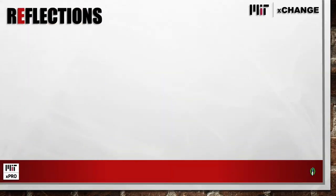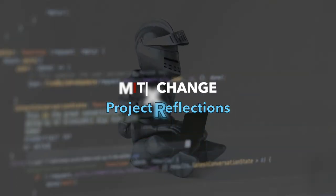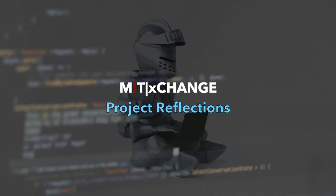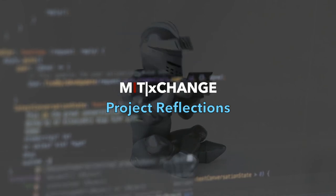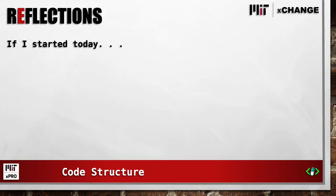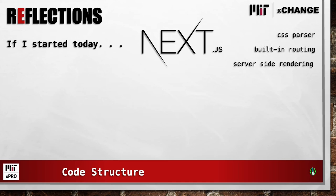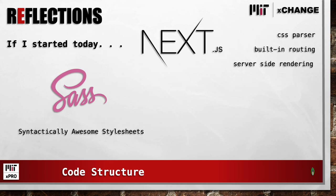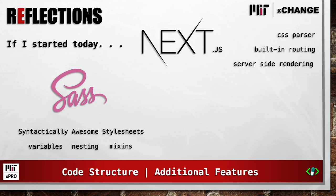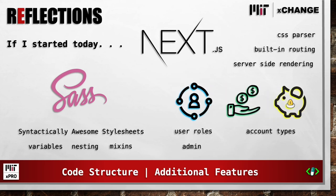Developer reflections on the code structure: if I were to start it today, I would use Next.js as it parses CSS, has built-in routing, and supports server-side rendering. I would also use SASS — syntactically awesome style sheets — as it supports CSS variables, nesting, and mixins. Some additional features would include user roles, like admin, as well as account types, like checking and savings.